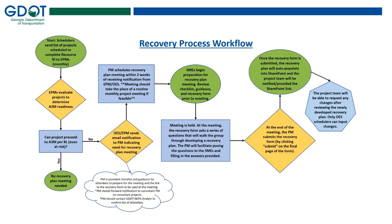Good morning. I'll start by giving a high level overview of what the actual process should look like. The process is going to be triggered by our OES EPMs in coordination with SMEs. It starts with the EPMs deciding at Resource ID Complete whether a project is ready to advance to A3M. If that project can go to A3M — even if it is at risk — that project will not fall in the category needing this overall process. Right now it's only for projects that cannot proceed to A3M.